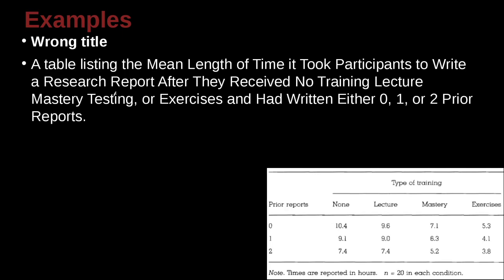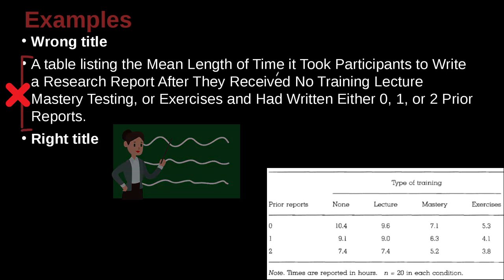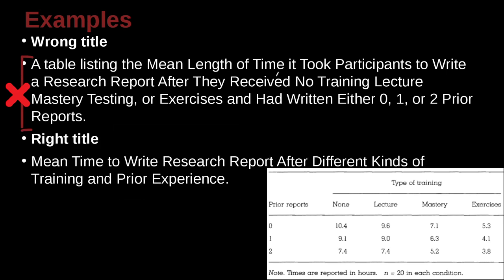Let's go ahead and look at some example table title examples, and here is a very long title. A table listing the mean length of time it took participants to write a research report after they received no training, lecture, mastery, testing, or exercise, and had written either 0, 1, or 2 prior reports. Oh man, that is basically here the person is trying to explain everything that's inside that table. That's it. That's everything that's inside that table.